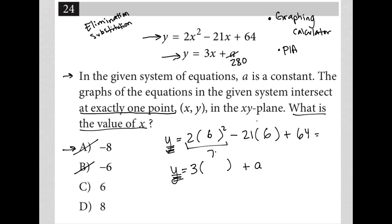So this is still our 72 here. This becomes negative 126, plus 64. So into the calculator, 72 minus 126 plus 64, I get 10. So this is y equals 10. This is also a 6. So I have 18 plus a equals 10, which means a equals negative 8.